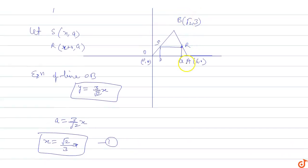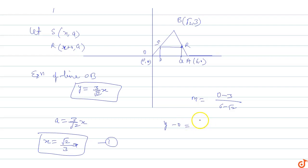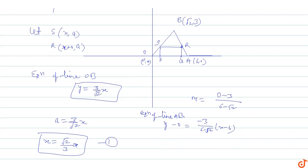Now we find the equation of line AB. The slope m of AB equals (0 − 3) upon (6 − √2), which is −3/(6 − √2). The equation of line AB is: y − 0 = [−3/(6 − √2)] × (x − 6). Since R is on line AB, the coordinates of R are (x + a, a), because the square has side length a.